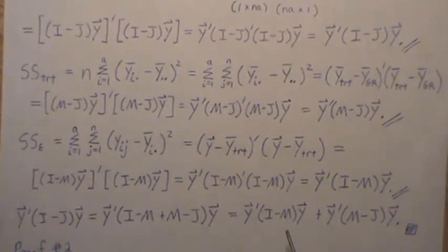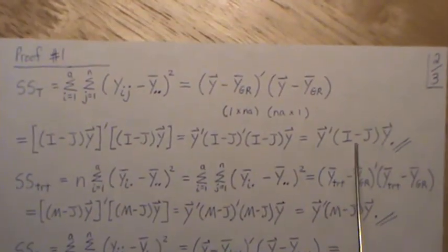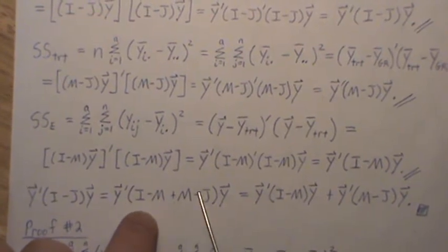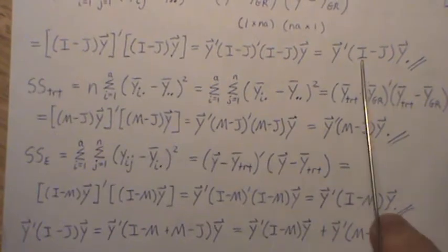Now all we need is to show the sum of squares total breaks into those two pieces. Starting with Y-transpose(I minus J)Y for SS Total, we add zero in the middle by inserting M minus M. Thinking of the result in two pieces and putting the Y's in, we get SS Error plus SS Treatment — and we're done with proof one.